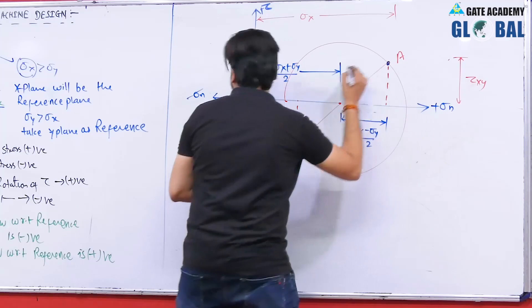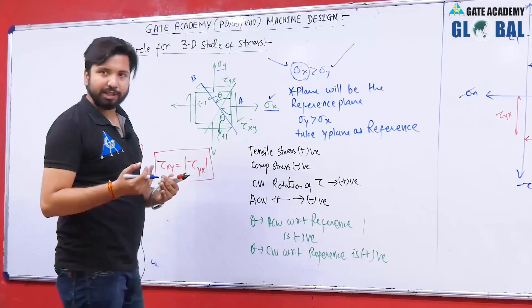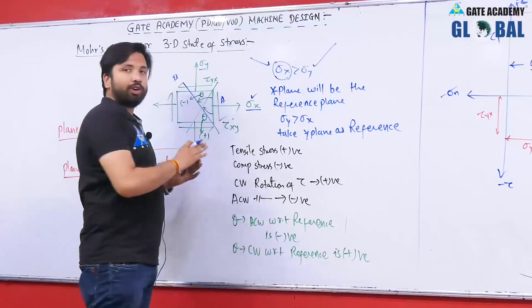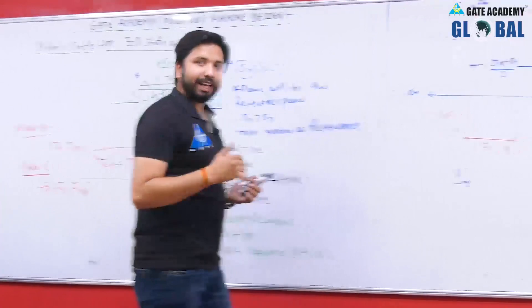The location of the center is at sigma x plus sigma y divided by 2. The distance from center to plane A along the sigma axis is sigma x minus sigma y divided by 2, which is the radius contribution. Now in this configuration, the difference plane is defined, and every plane will be located with respect to the reference plane.